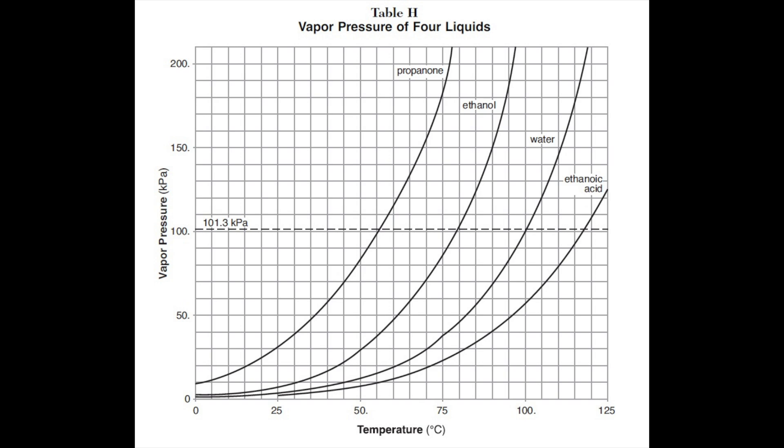As temperature increases, we can see that the vapor pressures of all four of these liquids also increases. Look at that dash line. That dash line represents standard pressure, 101.3 kPa. Wherever the curve crosses that dash line represents the normal boiling point. We just have to look down to the x-axis and read that temperature.